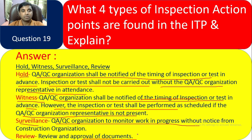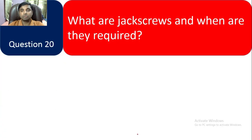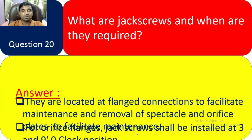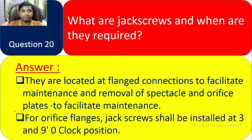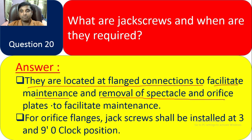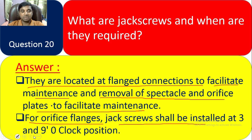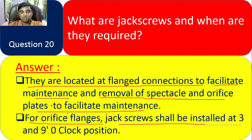Question 20: What are jackscrews and when are they required? Jackscrews are located at flange connections to facilitate maintenance and removal of spectacle and orifice plates. Jackscrews shall be installed at the 3 o'clock and 9 o'clock positions on orifice flanges.